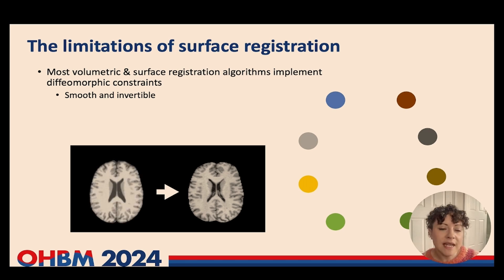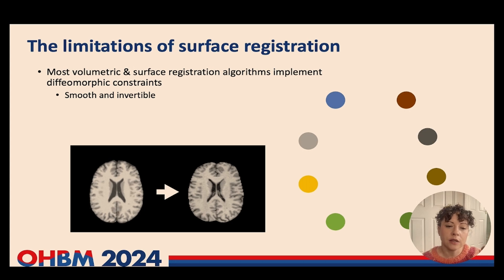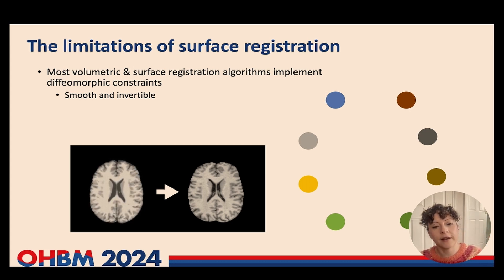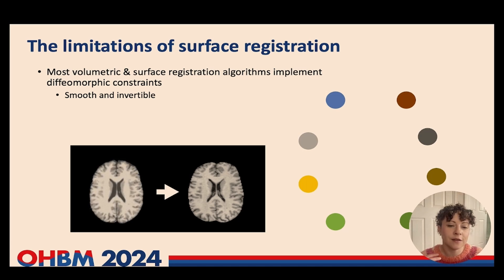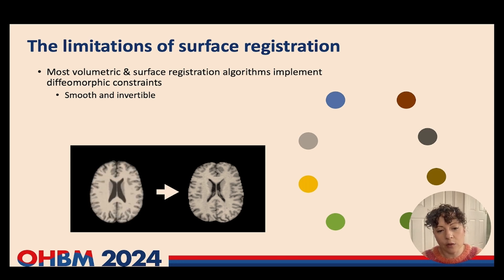What that means is there are many different ways that you can map one location in an individual brain to a location in another brain. For example, if we consider the 32K cortical surface, then there are 32,000 by 32,000 different mapping combinations. And combinatorially, that's a difficult and computationally costly space to explore.